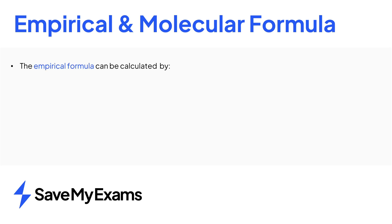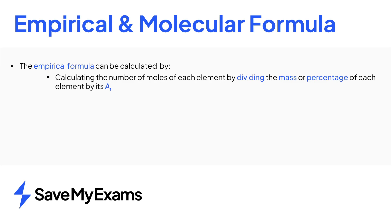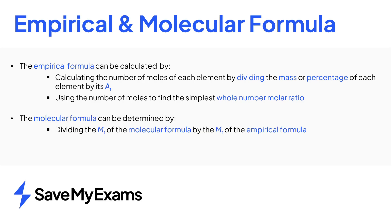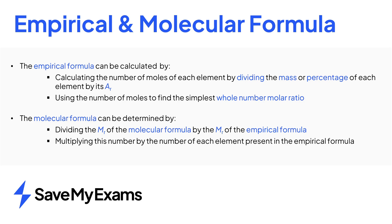To summarise: the empirical formula can be calculated by dividing the mass or percentage of each element by its relative atomic mass to give the number of moles of each element, then using the number of moles to find the simplest whole number ratio. The molecular formula can be found by dividing the relative molecular mass of the molecular formula by the relative molecular mass of the empirical formula, then multiplying the resulting number by the atoms which appear in the empirical formula.